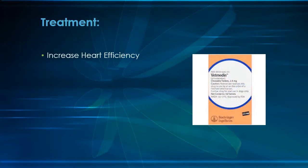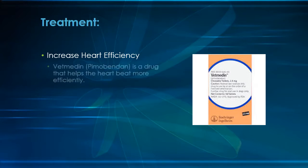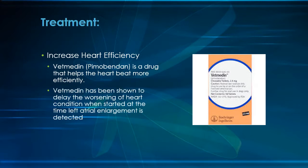One of the first goals of therapy is to increase the efficiency of the heart. We use a drug called Vetmedin, or Pimobendan, to achieve this goal. In recent studies, pets with mitral murmurs and enlarged left atria gained an additional year before they went into heart failure when given Pimobendan compared to those who received a placebo.